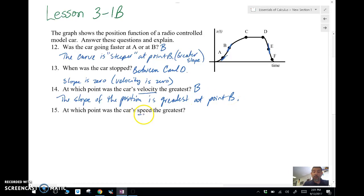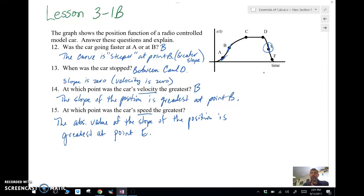That's different than the car's speed. The car's speed is the absolute value of the slope. So the absolute value of the slope of the position graph is greatest at point E. Right here, it has the largest slope in absolute value. So if we took the absolute value of that negative slope, it'd be positive, and that's the greatest.